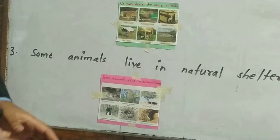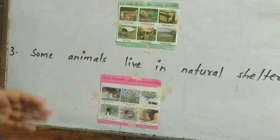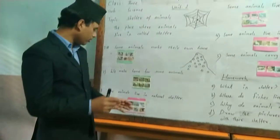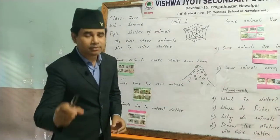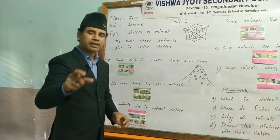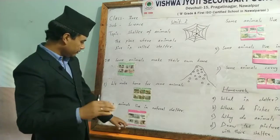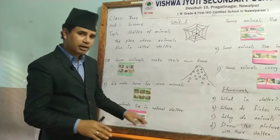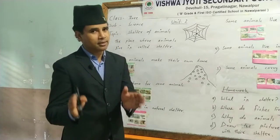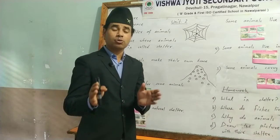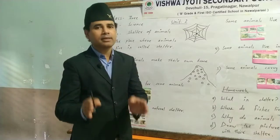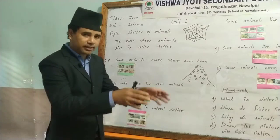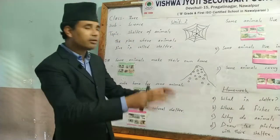A monkey lives on the branches of trees. Elephants also live under trees. A rabbit lives in a burrow. Snakes live in a hole. Rats also live in a hole — they dig the hole themselves. A fox lives in a cave, digging the mud to make their shelter inside it.